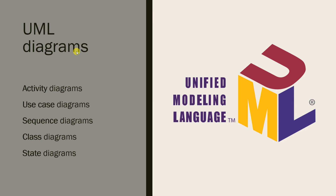Some of the most important and useful types of UML diagrams for system modeling are: activity diagrams, which show the activities involved in a process or in data processing; use case diagrams, which show the interactions between a system and its environment; sequence diagrams, which show interactions between actors and the system and between system components; class diagrams, which show the object classes in the system and the associations between these classes; and state diagrams, which show how the system reacts to internal and external events.